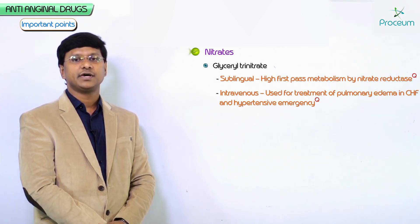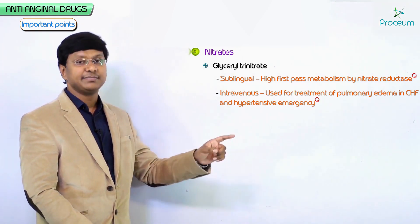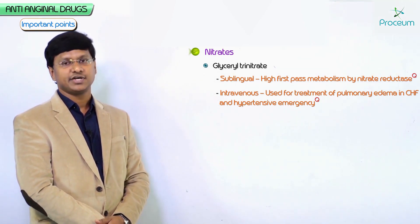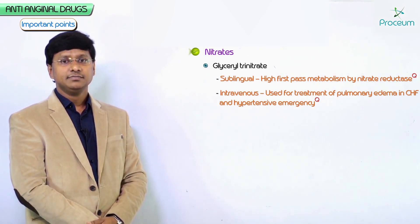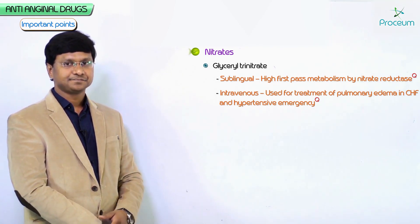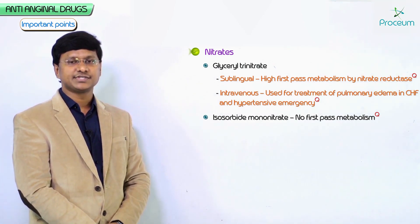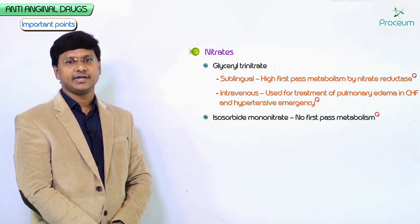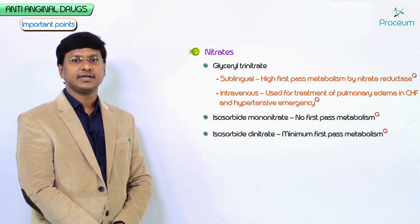Intravenous glyceryl trinitrate is used for the treatment of pulmonary edema, congestive heart failure, and hypertensive emergency. This is a very important MCQ: the intravenous uses of glyceryl trinitrate are for pulmonary edema and hypertensive emergency.